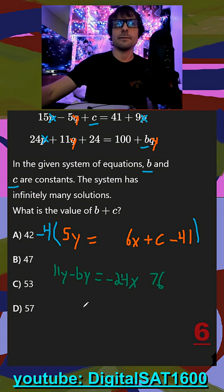This becomes negative 20y equals negative 24x minus 4c plus 164.